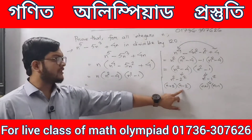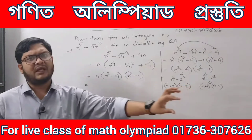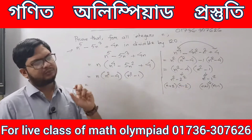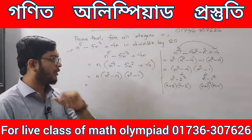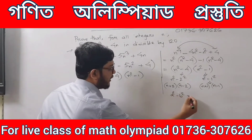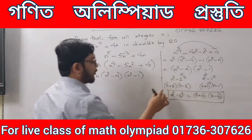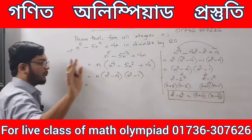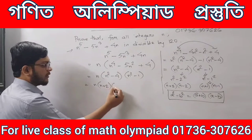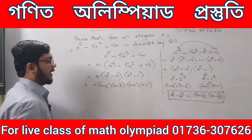This topic uses the a square minus b square formula — this is basic algebra. A square minus b square is equal to a plus b into a minus b. So we write: n into n plus 2 into n minus 2 into n plus 1 into n minus 1.